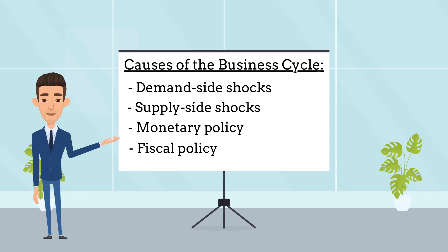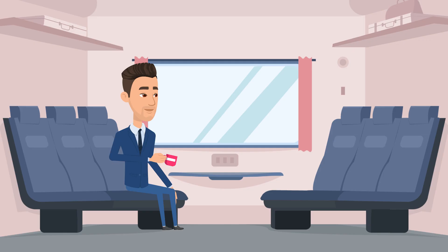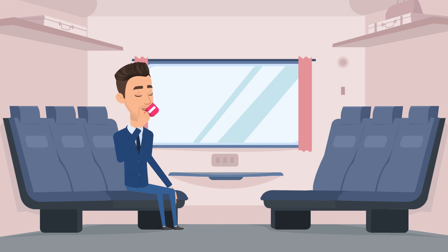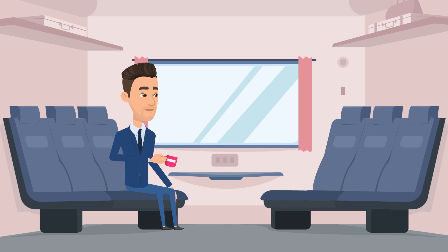Fiscal policy — government spending and taxation policies can also contribute to the business cycle. For example, if a government increases spending during an expansionary phase, it can boost economic activity, while cutting spending during a contractionary phase can exacerbate the downturn. Overall, the business cycle is a natural and inevitable part of a capitalist economy, driven by a complex interplay of economic factors. By understanding the phases of the business cycle and the causes that contribute to it, individuals and businesses can make informed decisions and prepare for the ups and downs of the economy.